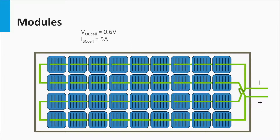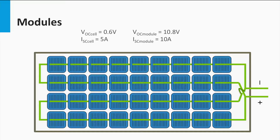If we rearrange the connection of this module, we can get a different current and voltage output. If we connect two strings of 18 series-connected solar cells in parallel, we would get a short circuit current of 2 times that of a single solar cell, which is 10 A. The open circuit voltage would be 18 times that of a single solar cell, which is 10.8 V.